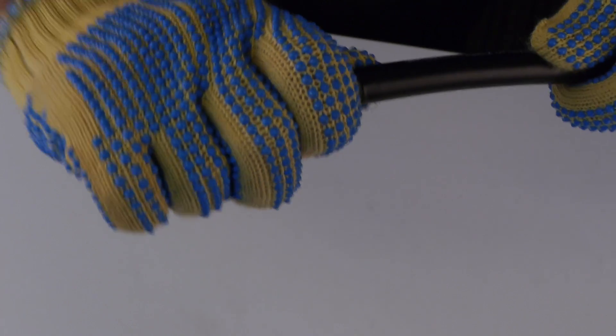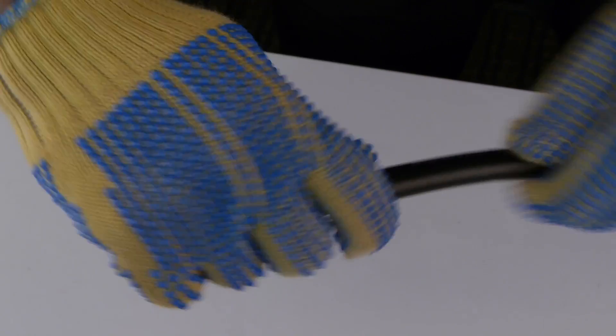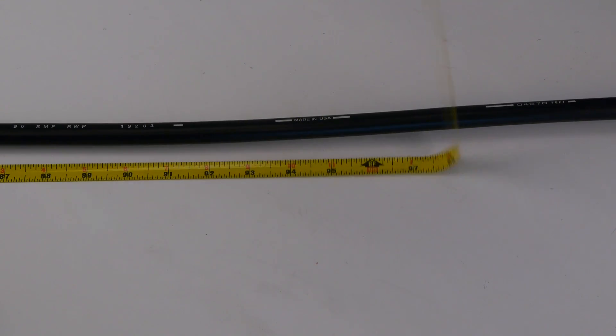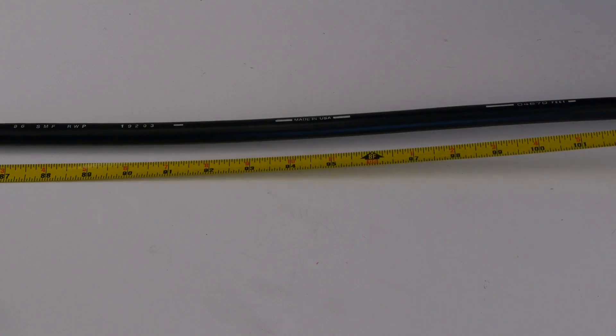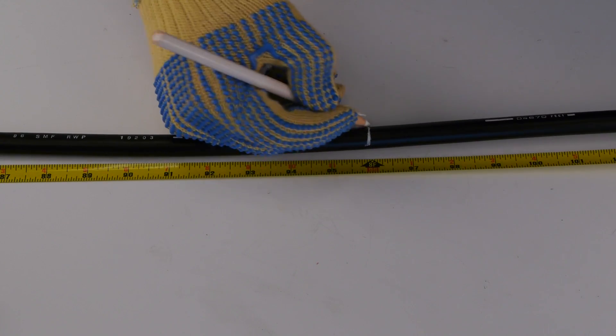Flex the cable slightly at the cut to complete the opening of the jacket. If necessary, adjust the cutting depth and repeat the process until the end piece of the jacket or armor can be pulled off the end of the cable. Measure and mark the length of the cable to be stripped according to the manufacturer's recommendation for the splice and termination system being utilized.